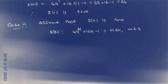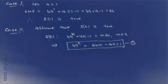Case 2: Assume that S(k) is true. So S(k) states that 49^k + 16k - 1 is divisible by 64, which equals 64m where m belongs to the integers.